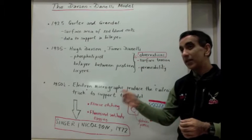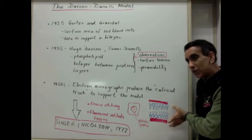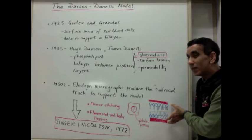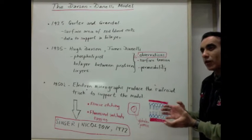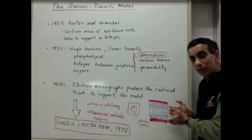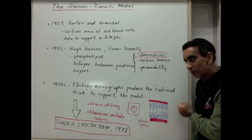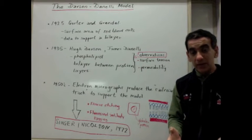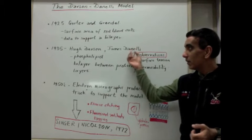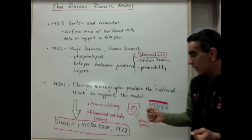In fact, in the 1950s with advances in electron microscope technology, the evidence to support this sandwich model from Davison and Danielli became even stronger with electron micrographs showing the classic railroad track with two dark lines on the outside to represent the proteins and two lighter lines on the inside. So the Davison-Danielli model of the cell membrane remained for some time with its birth in 1935, way up into the 1960s.